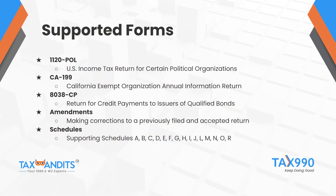The CA 199 is the California Exempt Organization Annual Information Return, which is the state-specific return filed to the state of California in addition to the 990. The 8038-CP is the return for credit payments to issuers of qualified bonds. We also offer the option to file amendments and all of the necessary schedules.